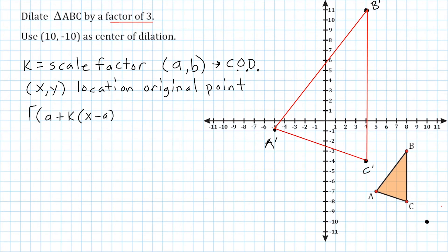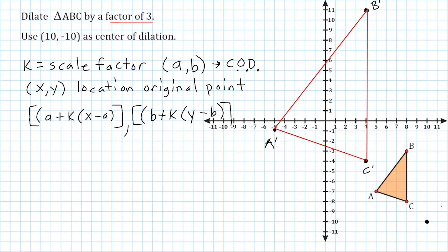All of that finds the location of our new X coordinate. And we do the same thing for our new Y coordinate: B plus K multiplied by Y minus B. Now we identify the values of A, K, X, B, and Y — all of that information is given in the problem. So let's get started.